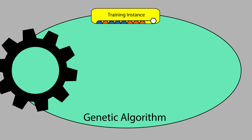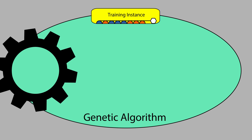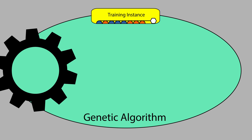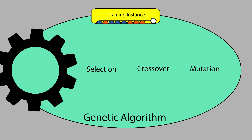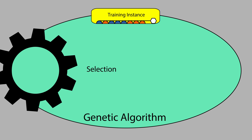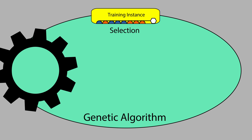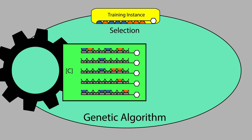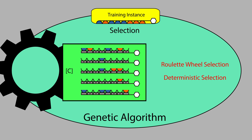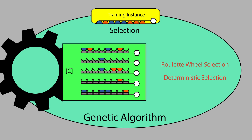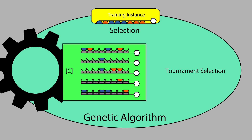The LCS genetic algorithm typically includes three mechanisms: selection, crossover, and mutation. Selection picks two parent rules from the correct set as templates for offspring rules. Selection mechanisms such as roulette wheel or deterministic selection could be used, but tournament selection is currently the preferred approach.